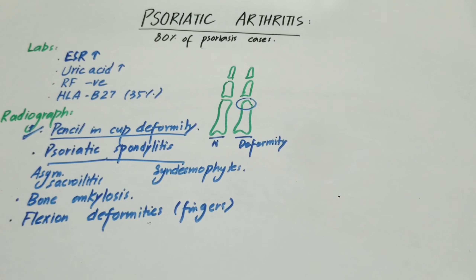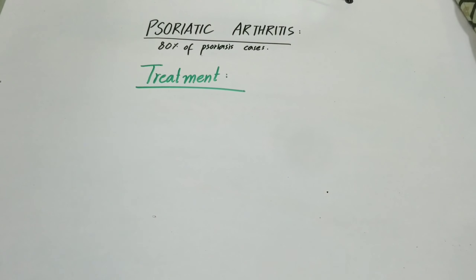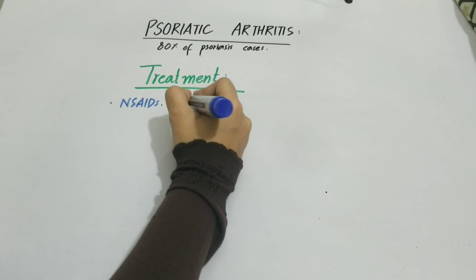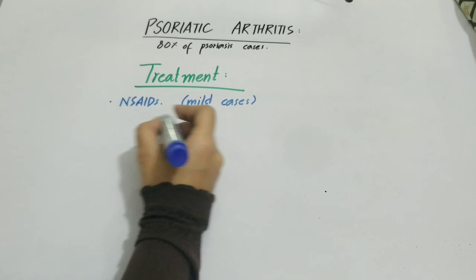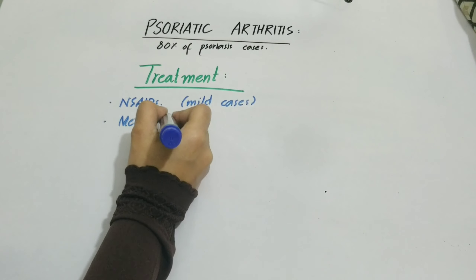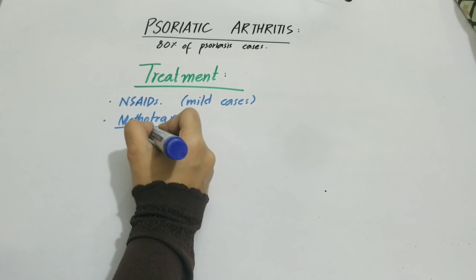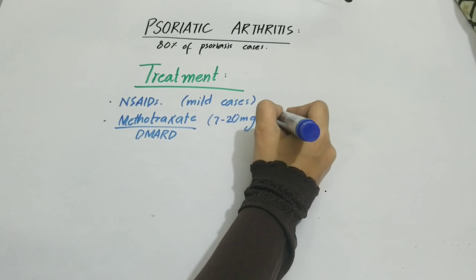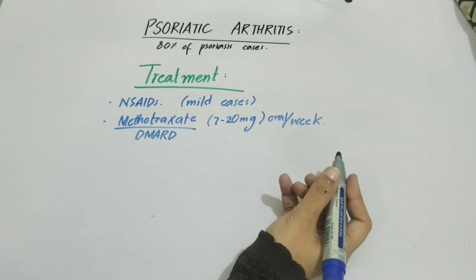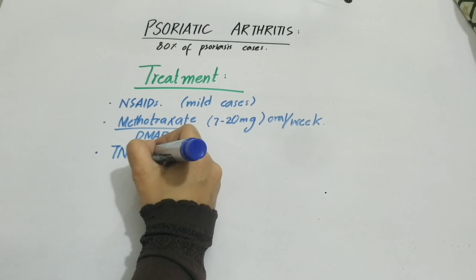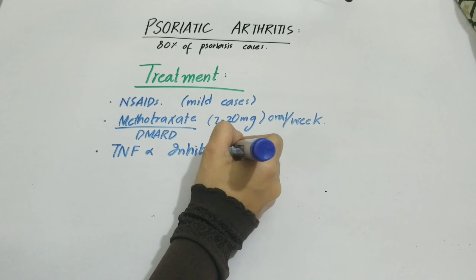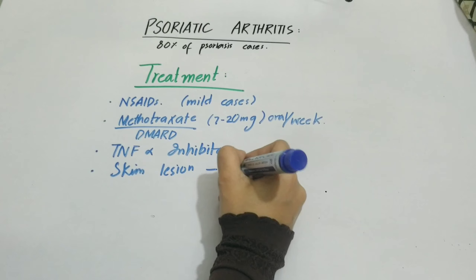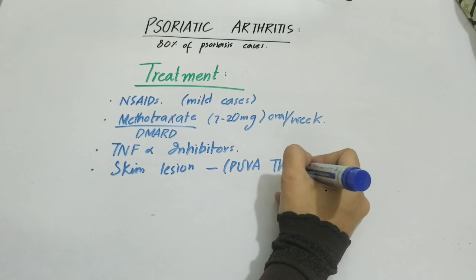Nail changes on radiographs include nail pitting and crumbled nail plate. For treatment: in mild cases we give non-steroidal anti-inflammatory drugs (NSAIDs). If more severe, DMARDs such as methotrexate 20 mg orally per week are given. TNF inhibitors, which are biological agents, are also used. For the skin lesion of psoriasis, UVA laser therapy is used. This is all about psoriatic arthritis.